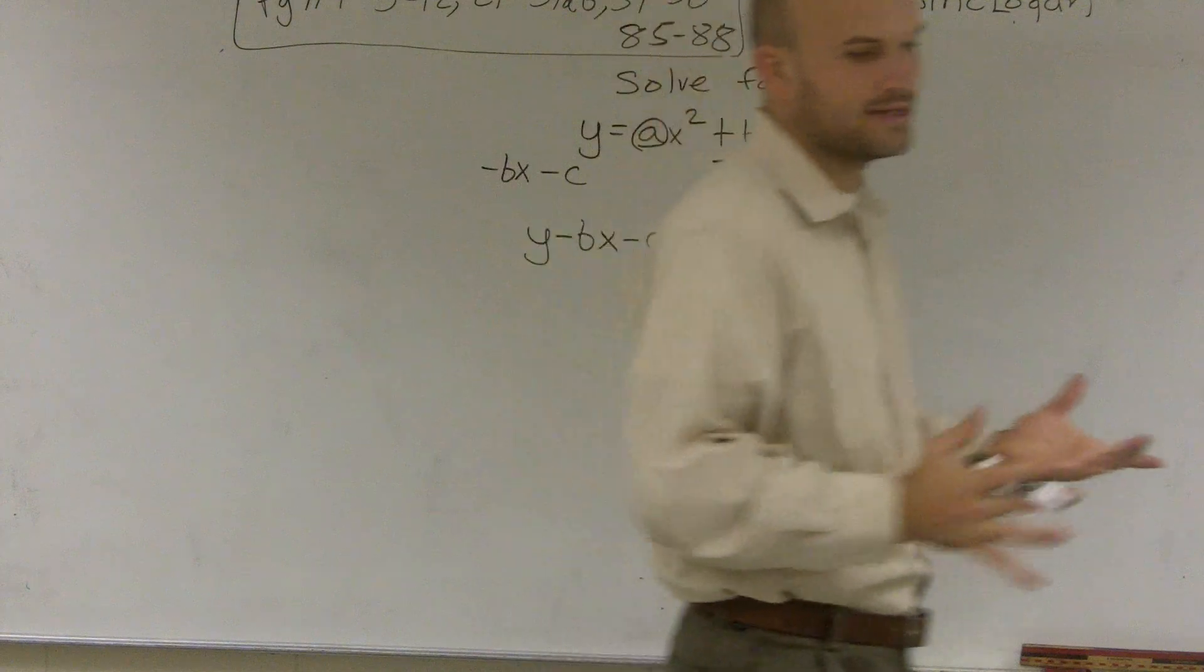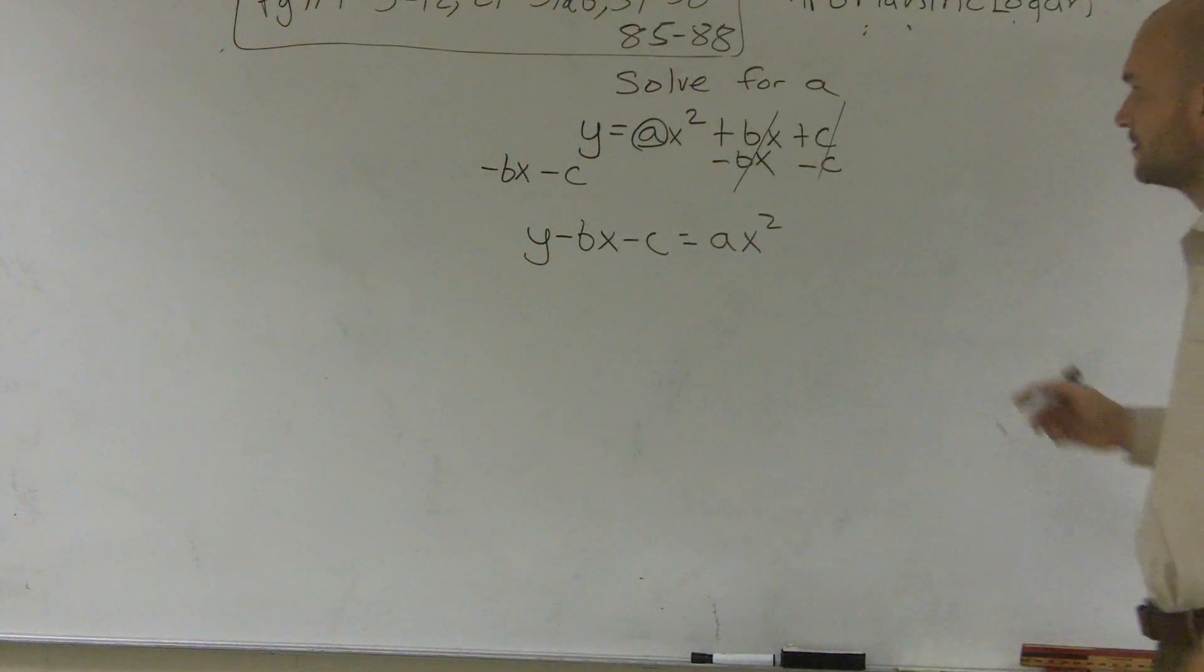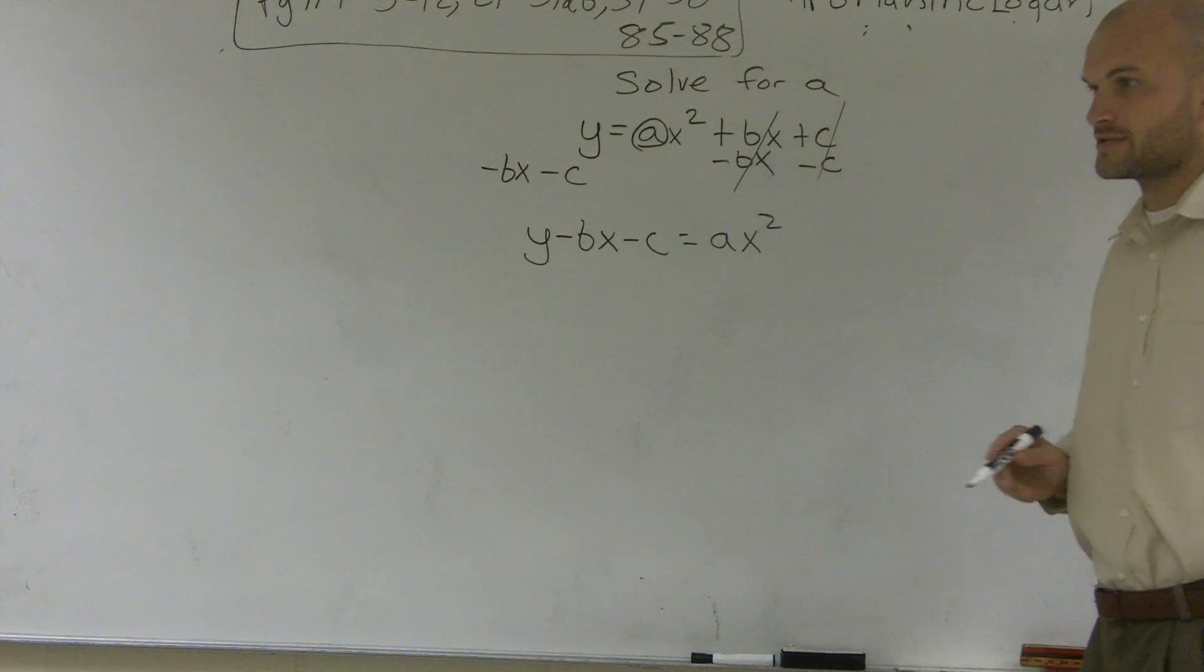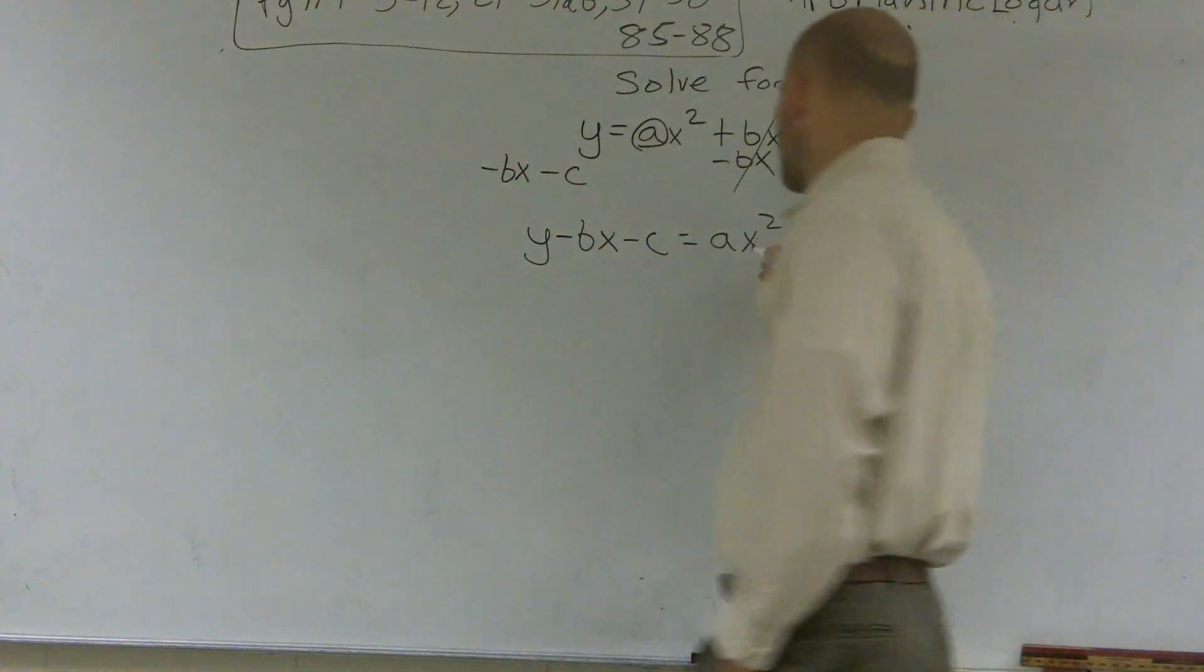Now, again, I need to look at it and say, what is happening to my variable a that's preventing it from being by itself? Well, it's being multiplied by an x squared. So to get rid of multiplication of an x squared, I can divide by x squared.